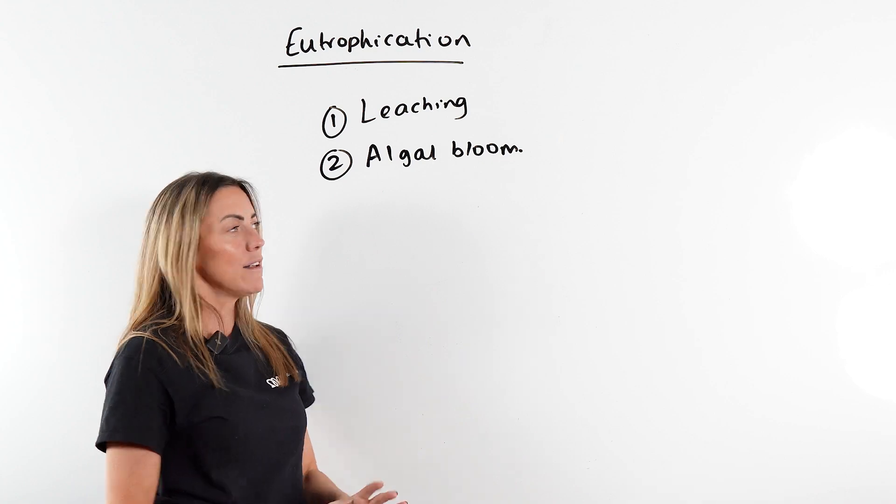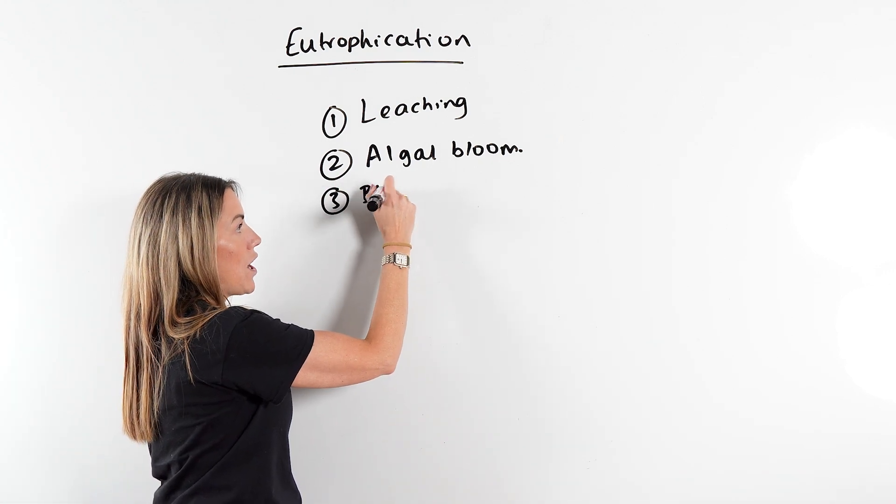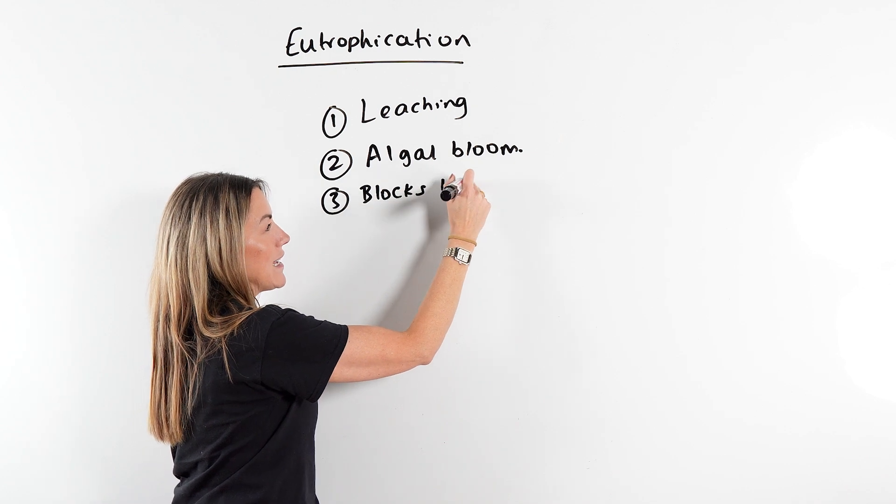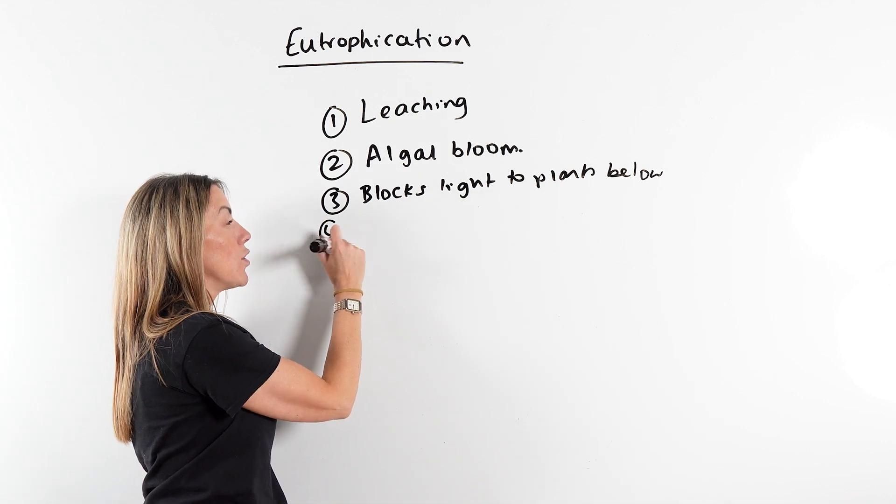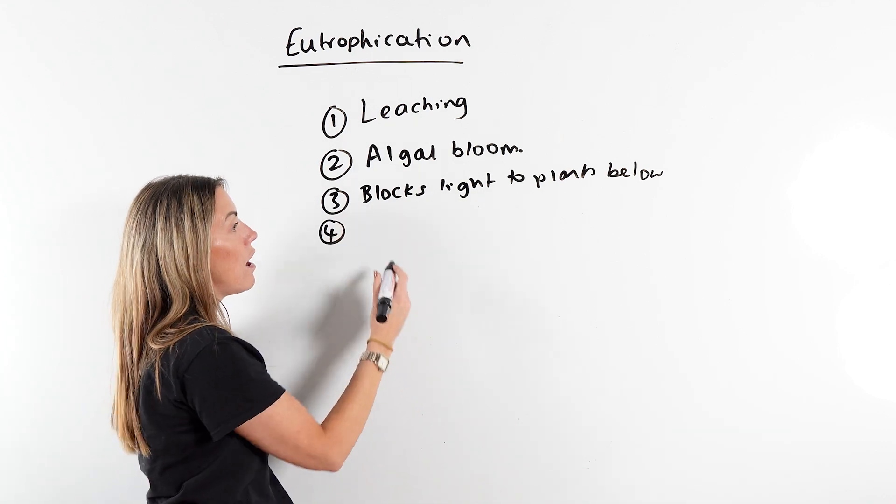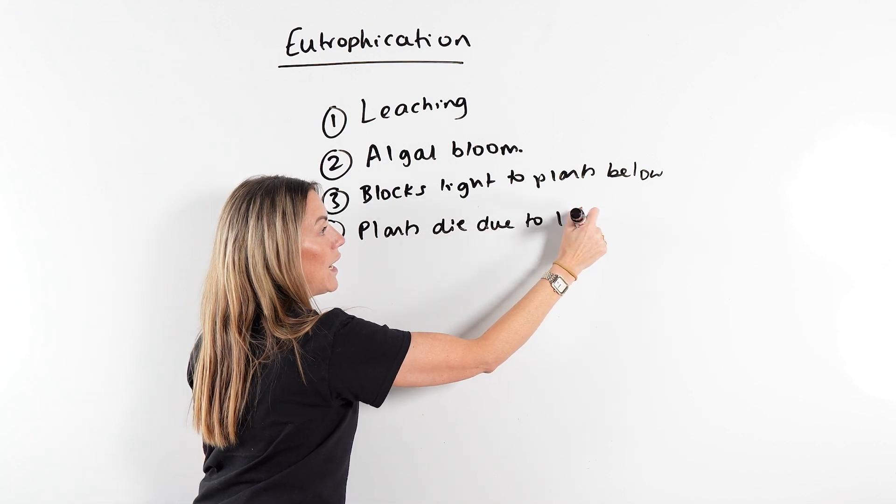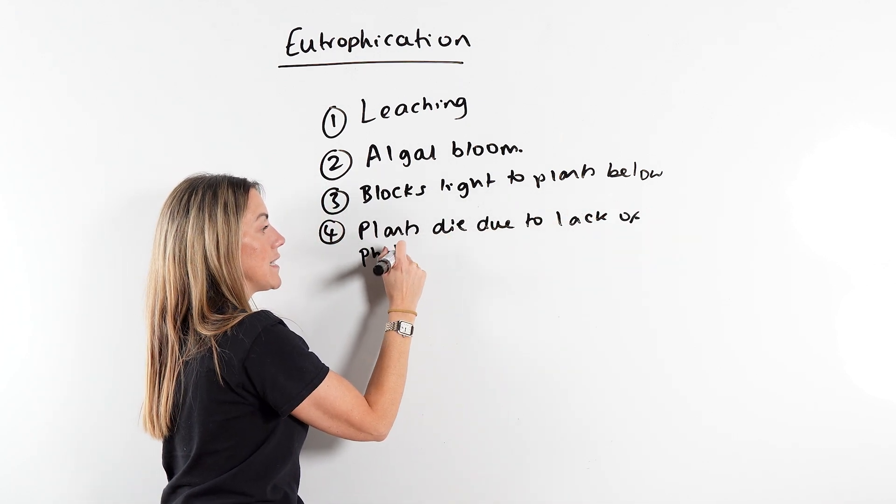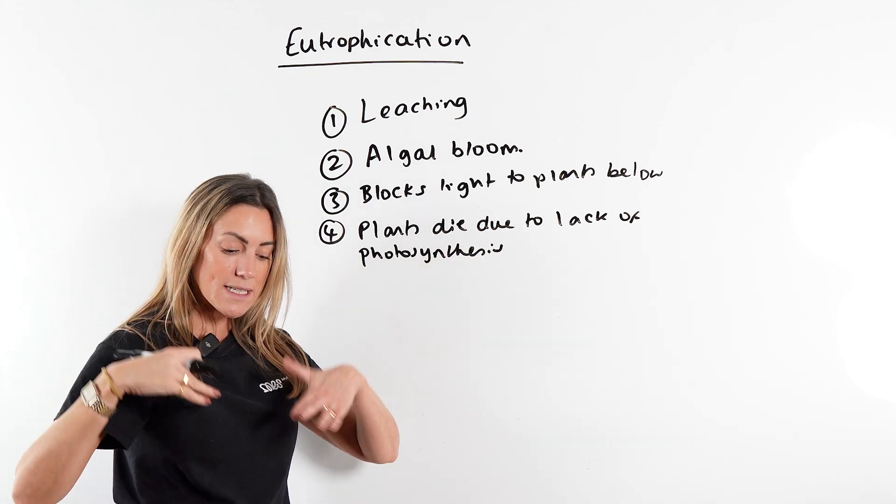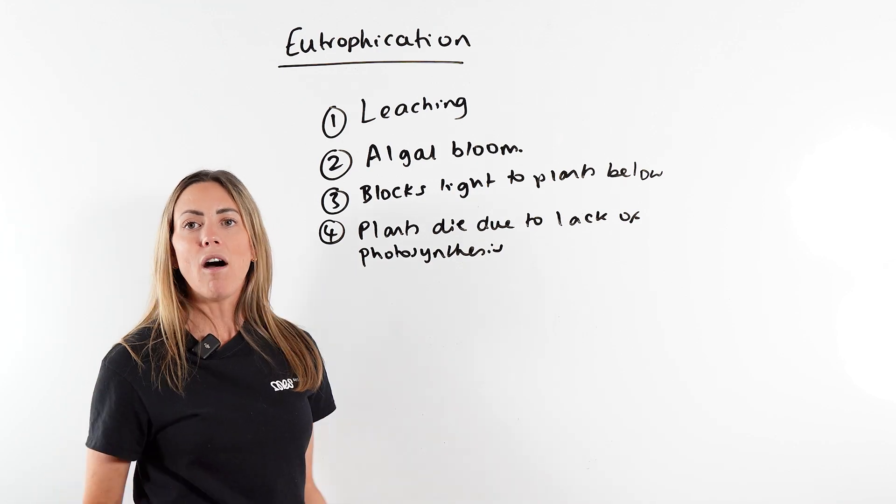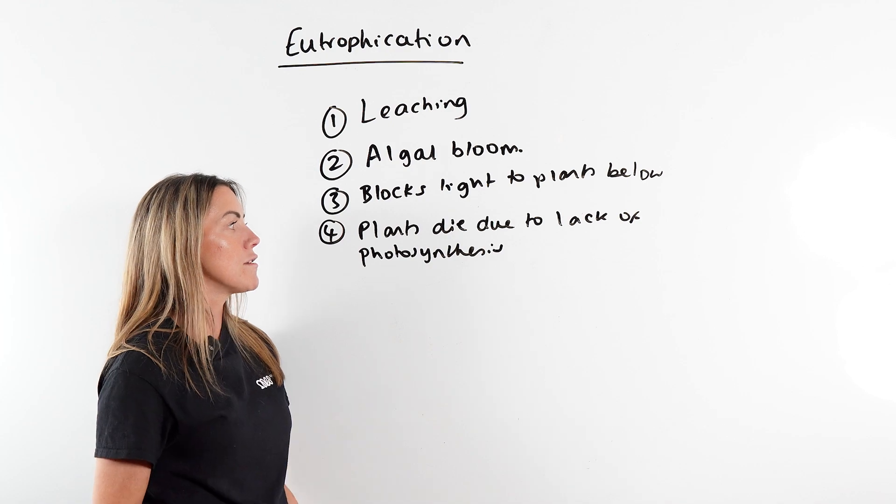Now if you get rapid growth of algae, that algae on the surface of the water is going to block light to plants below. And then you can also say, just in case it's worth a mark, plants die due to lack of photosynthesis. Because if the algae above is blocking the light, the light isn't penetrating to the plants below, they can't absorb light, they can't photosynthesize, they can't produce enough glucose, so those plants die.